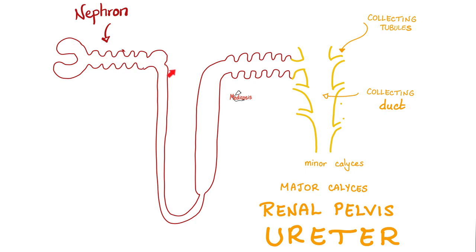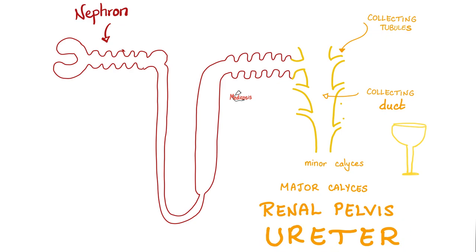Each kidney has about one million nephrons. After the nephron, you have collecting tubules, then collecting ducts, then minor calyces. A calyx is like a chalice — it collects urine. After the minor calyces comes major calyces, then the renal pelvis (the pyelo), then the ureter, then the bladder, then the urethra, and out.